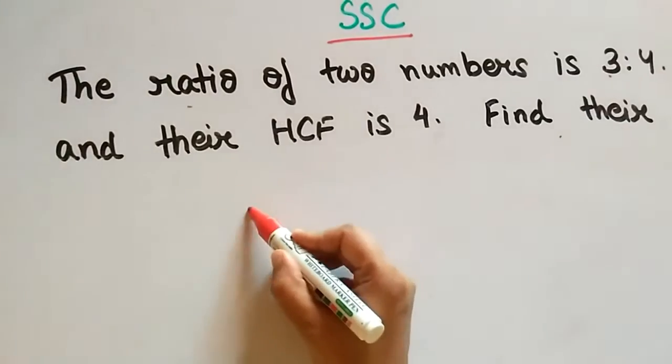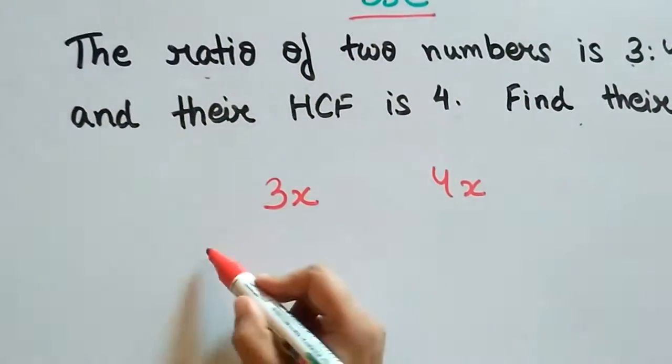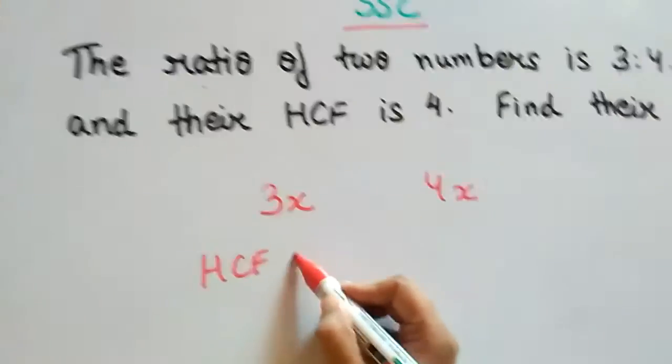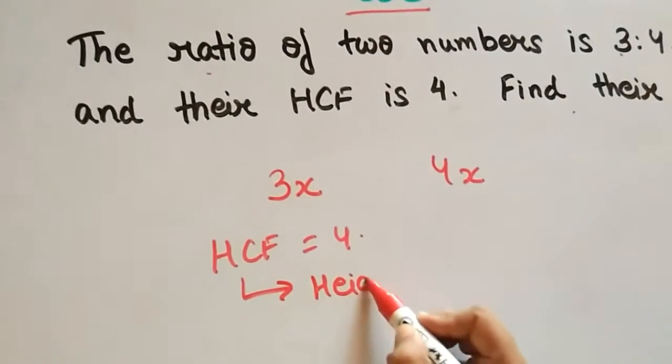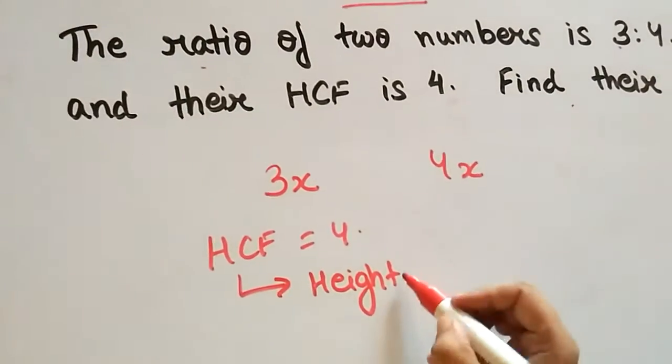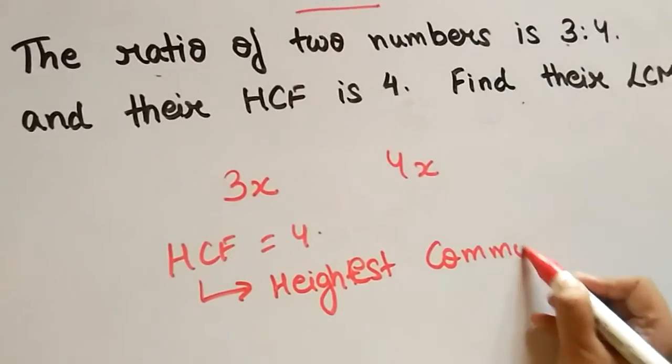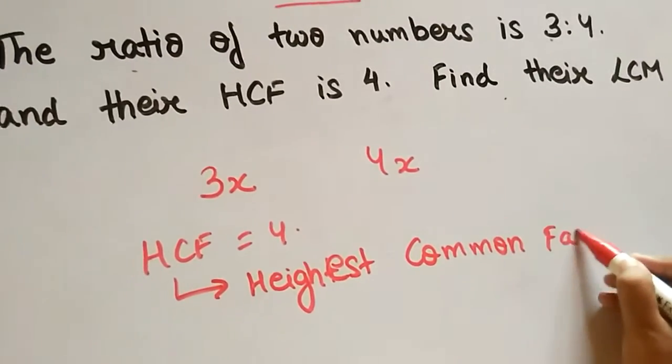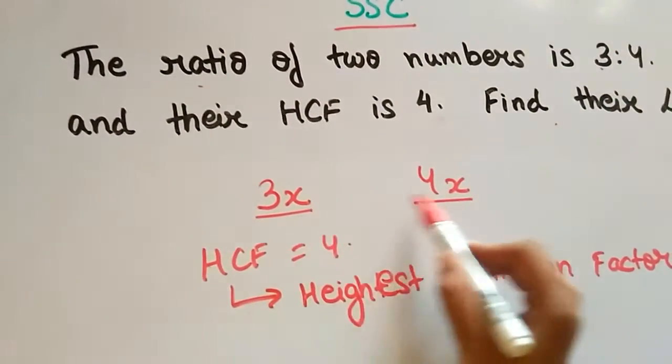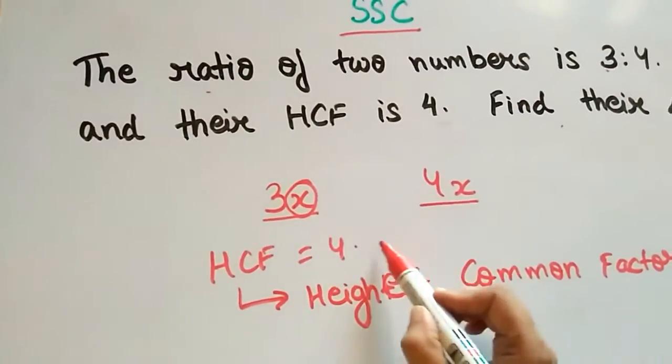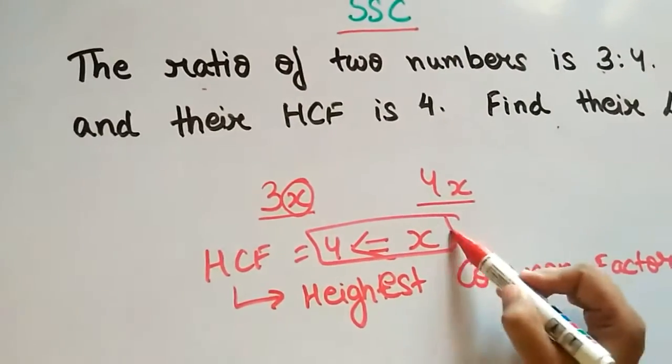So let's say the two numbers are 3x and 4x. HCF is 4. What is HCF? HCF is the highest common factor. So the highest common factor between these two numbers is x. Clearly, x is equal to 4.